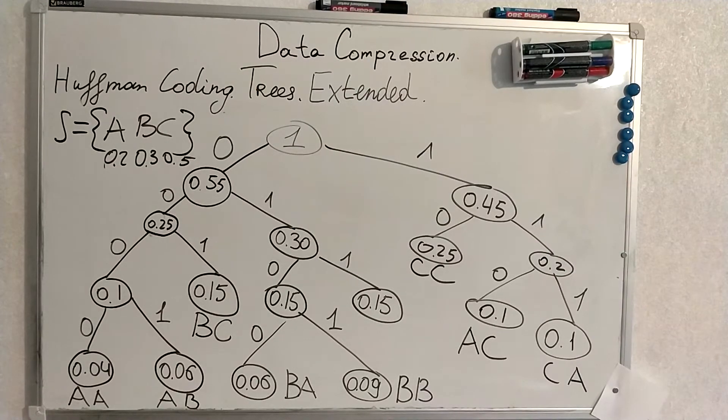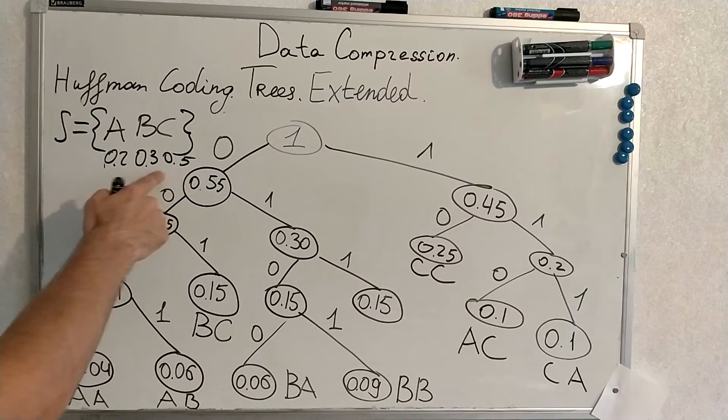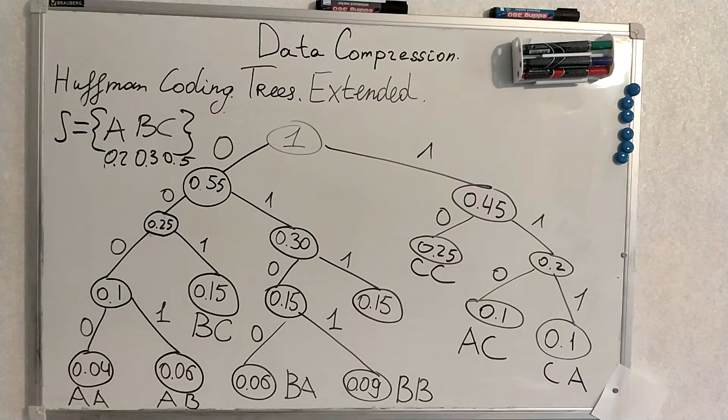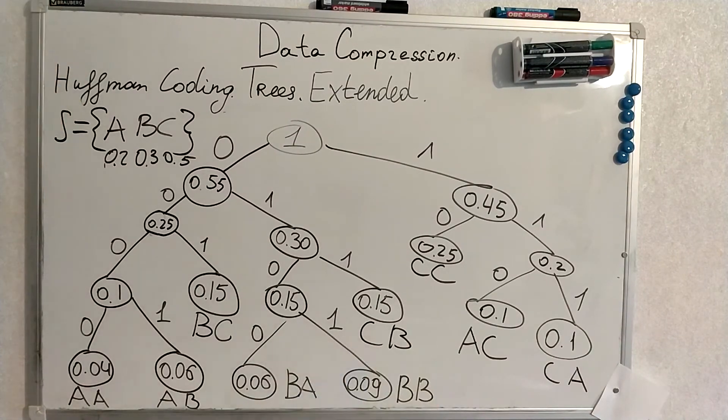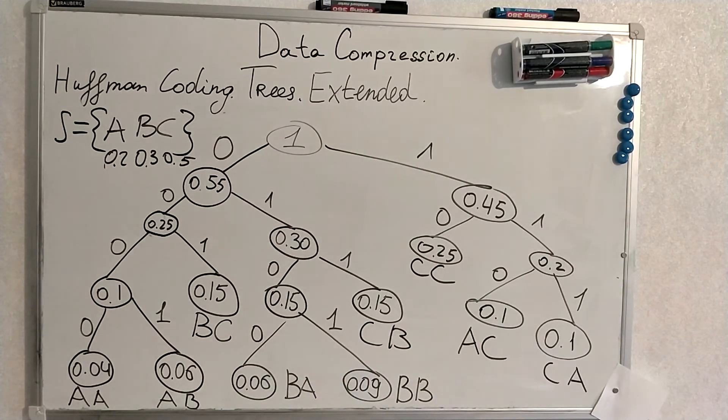For example, let's look at the symbol BC. What's the probability of BC? I think it's here. It's 0.15. And this should be for CB because we multiplied C and B.